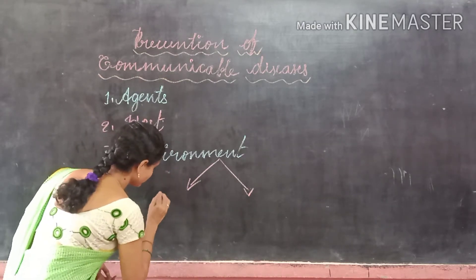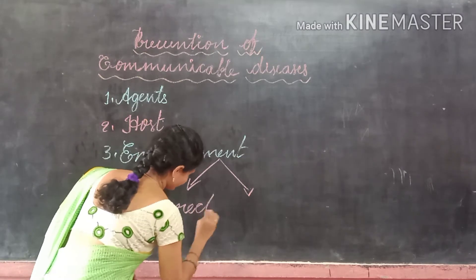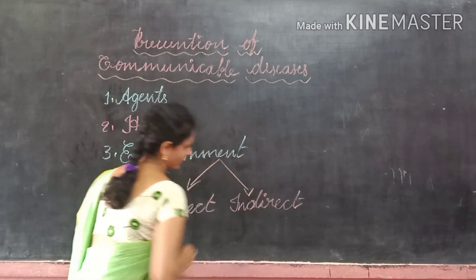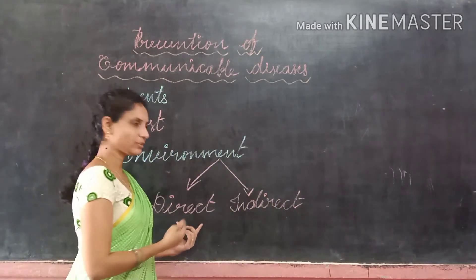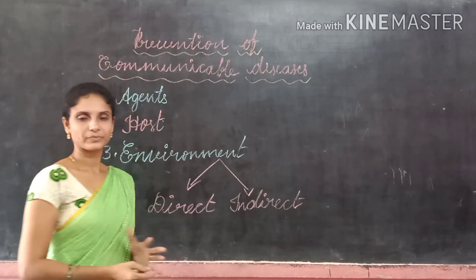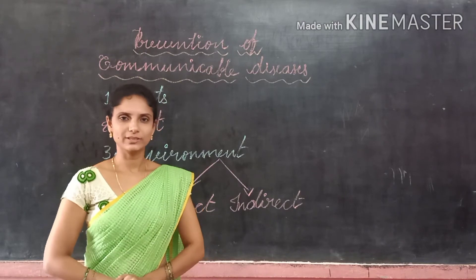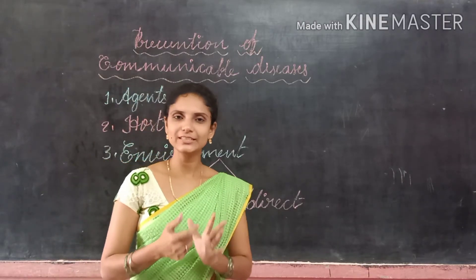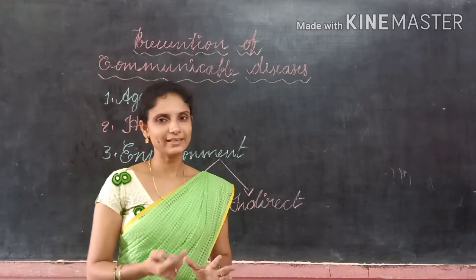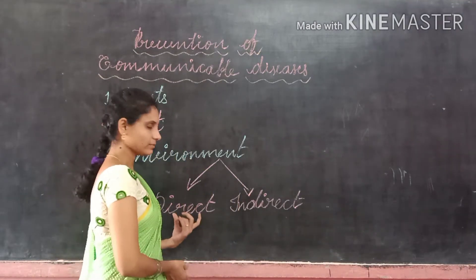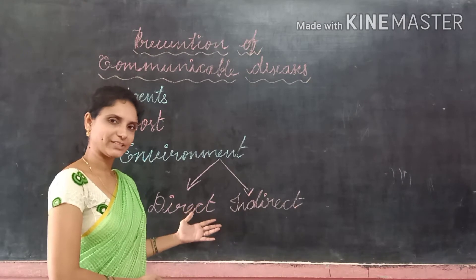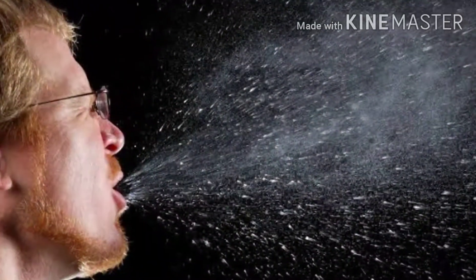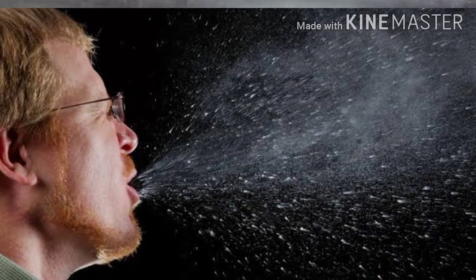Direct method: direct spreading includes coughing, sneezing, and touching. If you touch a sick person, you may get the disease. If you breathe the air which contains discharge from a sick person, you may also get the disease. Through sneezing and coughing, the germs enter into the air from the sick person. If you inhale that air, you may get the disease.